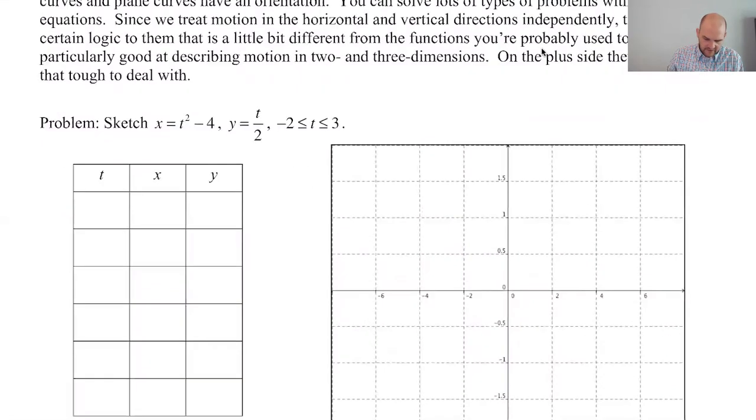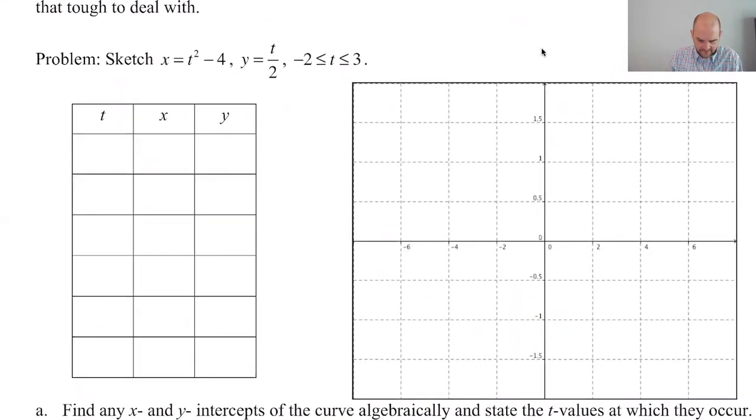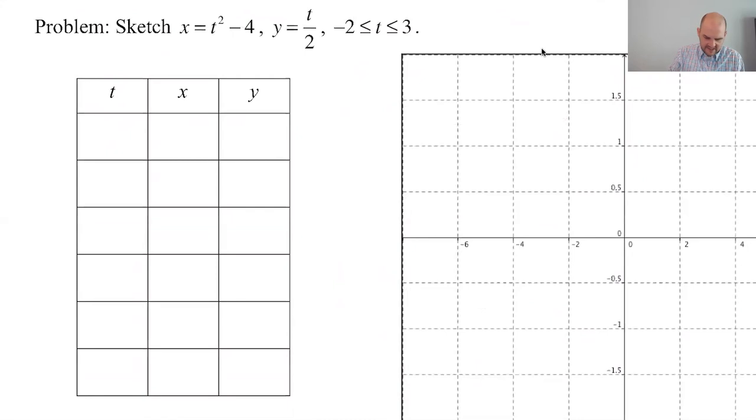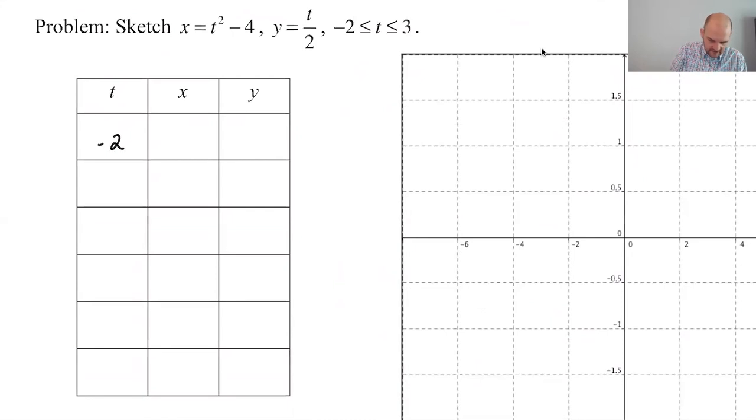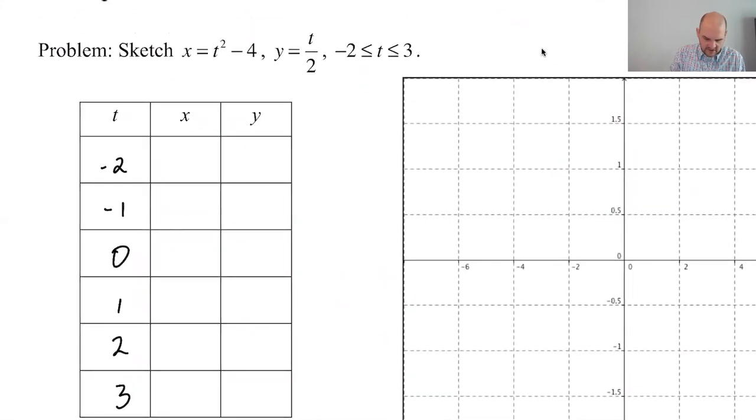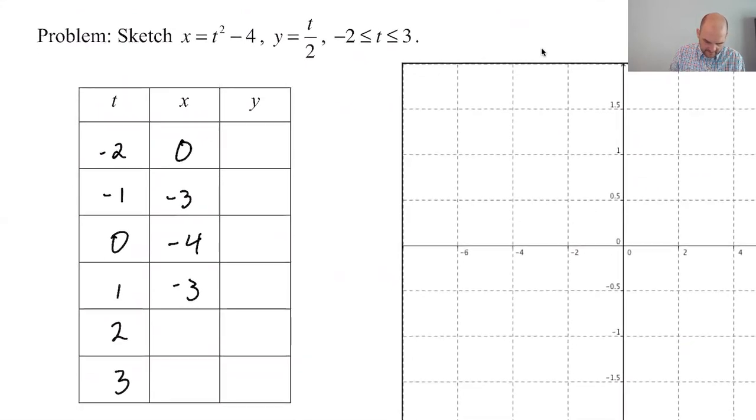So let's see if we can do it. We want to sketch this. I'll make some t's here. So negative 2, negative 1, 0, 1, 2, 3. And then to get the x coordinate, I'm just going to plug in here. So square it, subtract 4 is 0, square it, subtract 4 is negative 3, negative 4, negative 3, 0 again, and then 5. So those are the x coordinates.